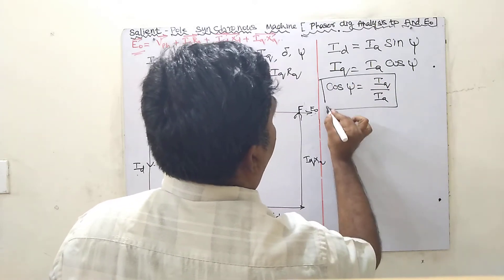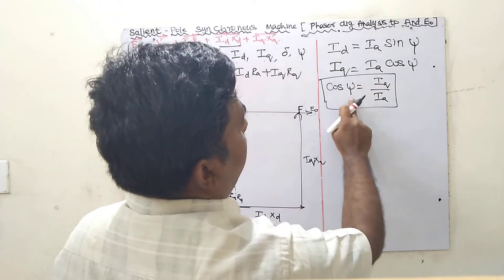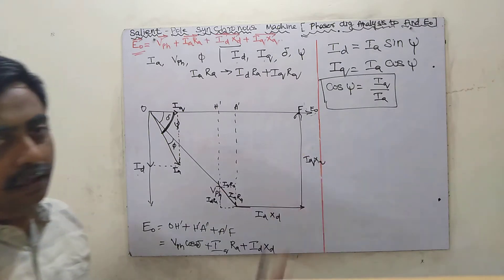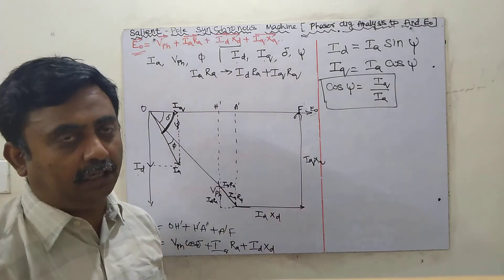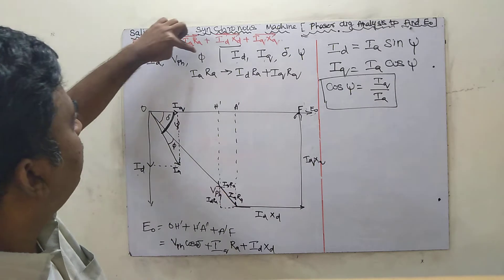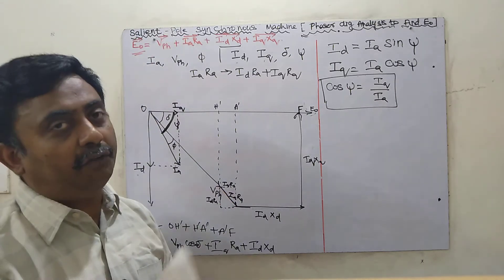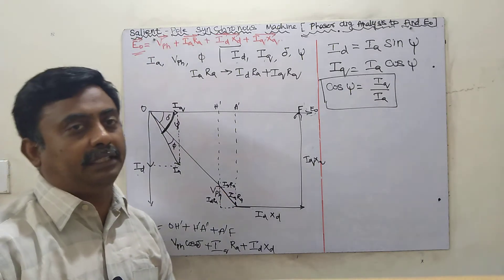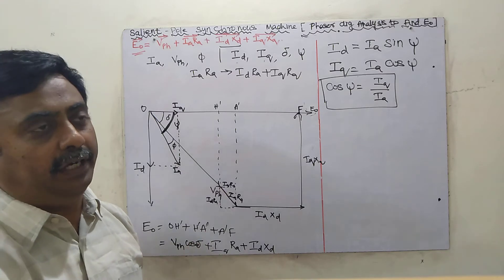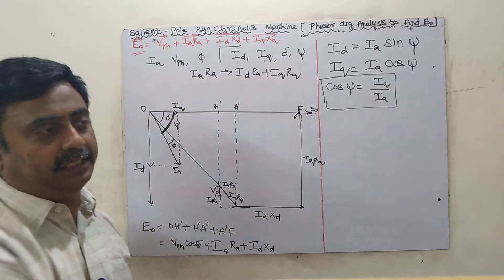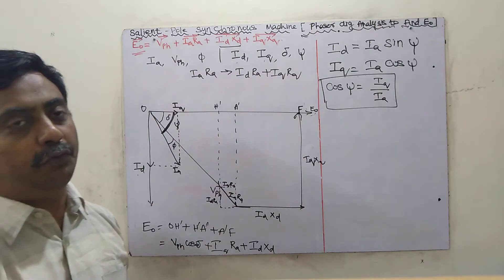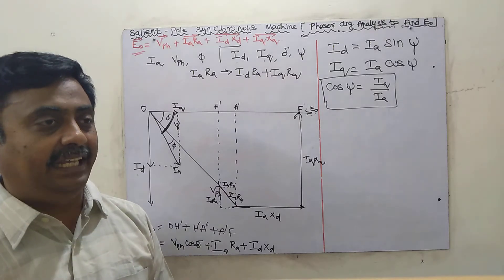These are all not known quantities. Psi is not a known quantity. IQ and IA — we have to find all these quantities. The only known quantities are IA, V phase, and phi. XD and XQ we can find by using the slip test. In the next session, we will find how to use the slip test to find XD and XQ.